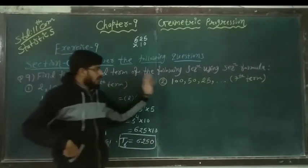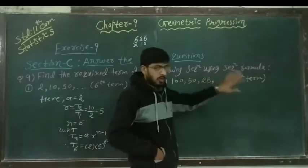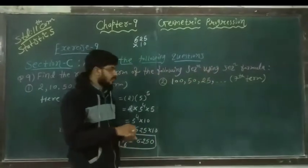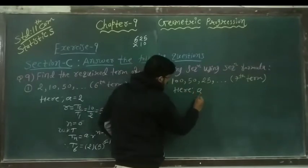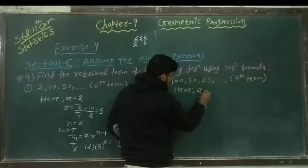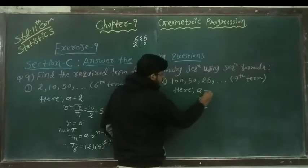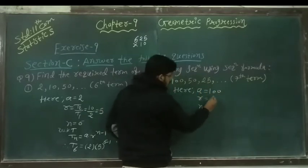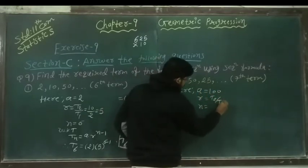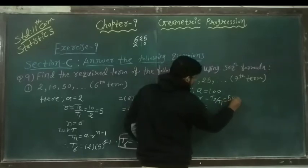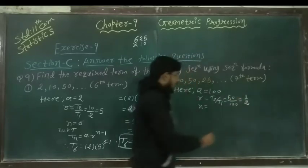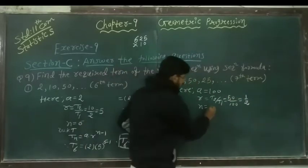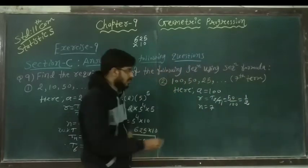Now the second problem: 100, 50, 25, and so on. Find the seventh term. Same as above, first we find the first term and common ratio R. First term A is 100. Common ratio R is given by T_2 divided by T_1, which equals 50 divided by 100, so R is equal to 1 by 2. And the value of N is 7, because we have to find out the seventh term.